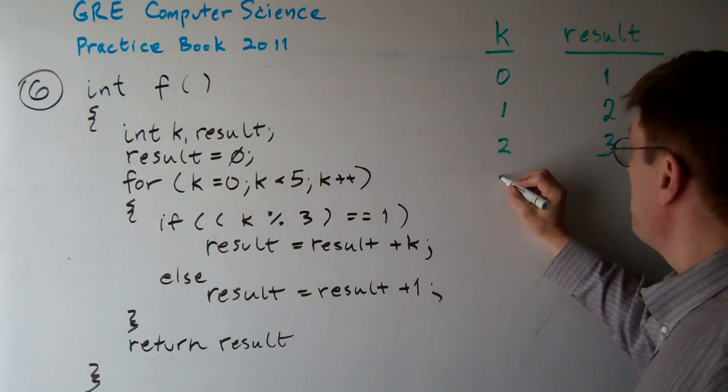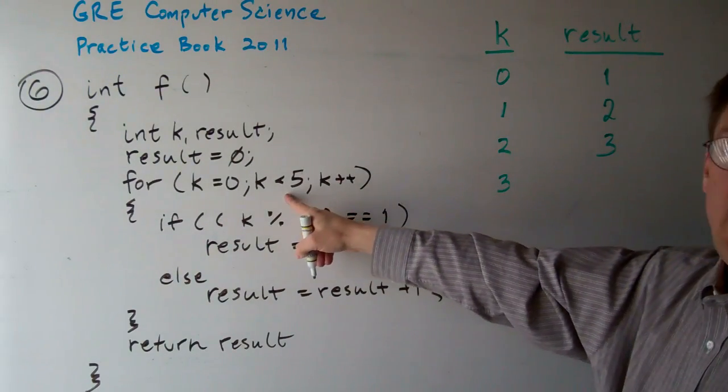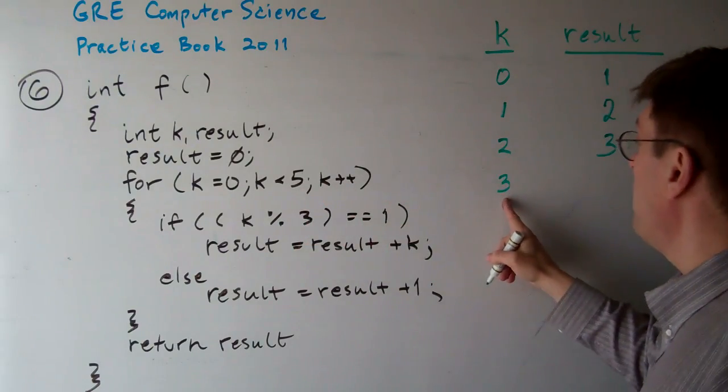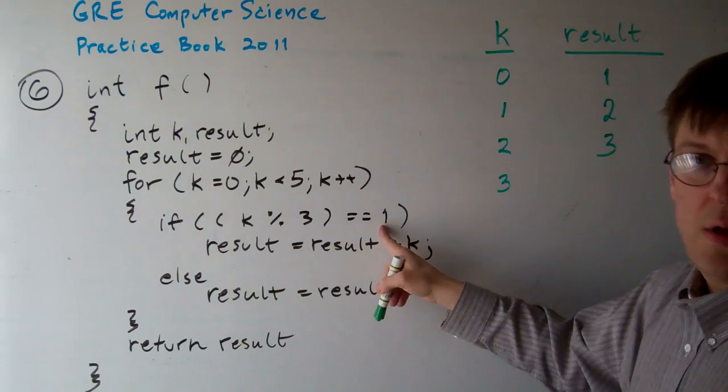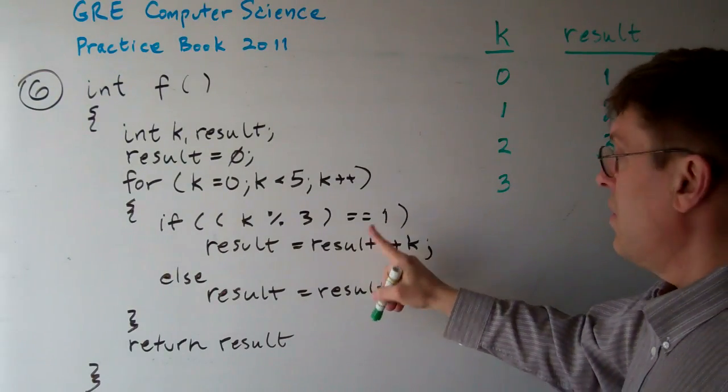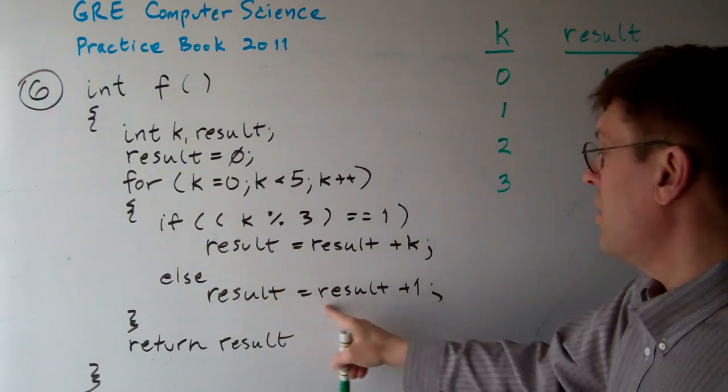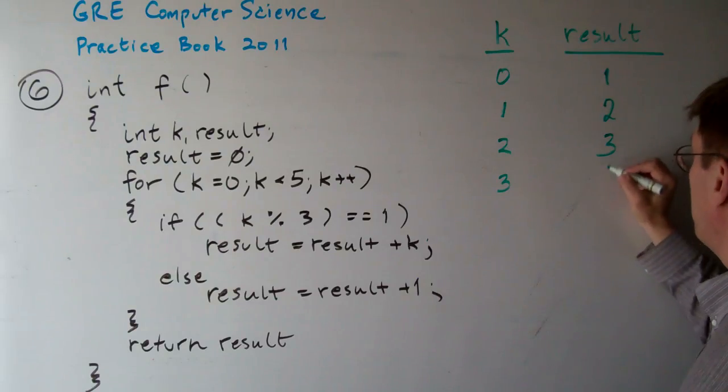Loop again. And we keep on looping until k gets to be 5. So we still have 3 here. k is 3. Is k mod 3 equal to 1? No, k mod 3 is 0. So if we don't do this, we do this one. Result gets result plus 1 again. So this is going to be a 4.